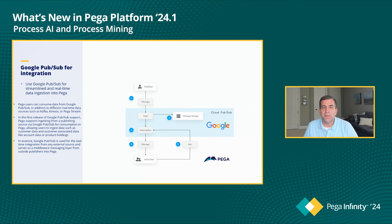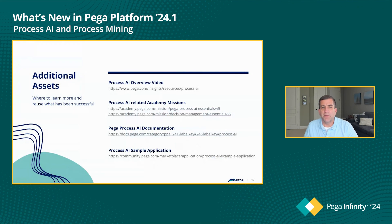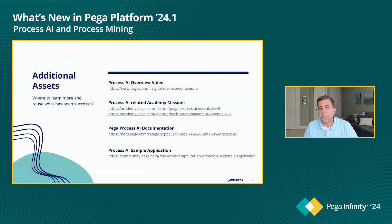That's a quick overview of Process AI and some of the cool new things in Pega Infinity 24. There are lots of ways to learn more. First, there is a new Decision Management Essentials course that became available in December — if you are looking at deploying Process AI directly or on behalf of your clients, this is really valuable background. We've also refreshed the Process AI documentation, which is much easier to use. And finally, we have updated the Process AI sample application to be consistent with Pega Infinity 24.1.